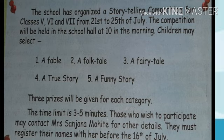Now in this announcement, you can clearly see there are important points being mentioned — what, when, where, who, why, and how. What it is: it's a storytelling competition, held in school. They have given us the day, the time, the time limit, and who to approach. This is another example of an announcement that is short, simple, and sweet, but also specifies the date and time, as you can see in this announcement.